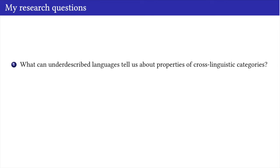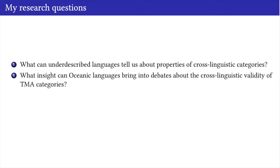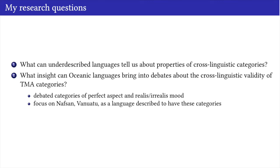Let's start with the research questions I had at the beginning. What can other described languages tell us about properties of cross-linguistic categories? I soon focused on oceanic languages and asked what insight they can bring into debates about the cross-linguistic validity of TMA categories. I focused more specifically on Nafsan and on the debated categories of perfect aspect and the realis-irrealis distinction, which Nafsan has been described by Nick Thieberger as having both.